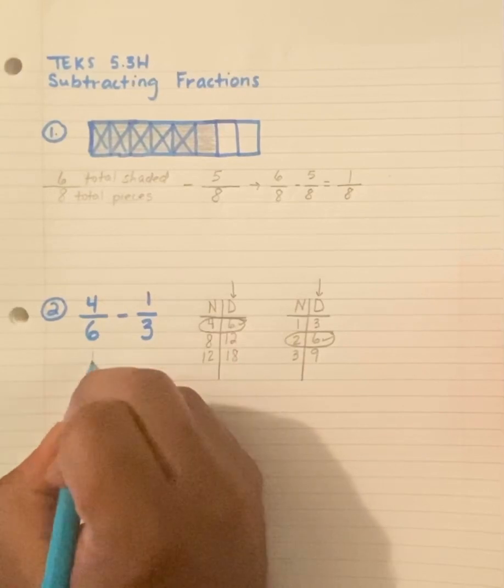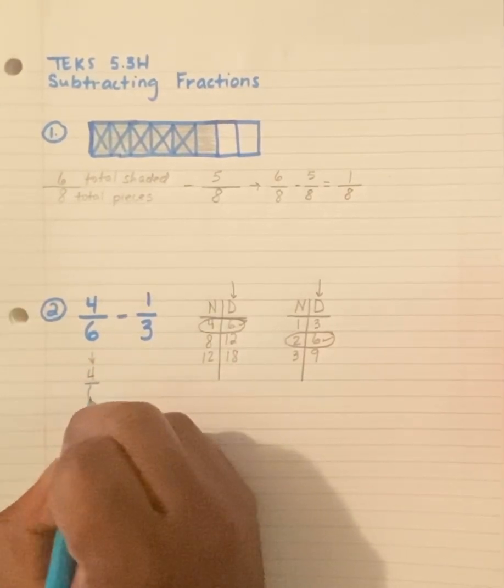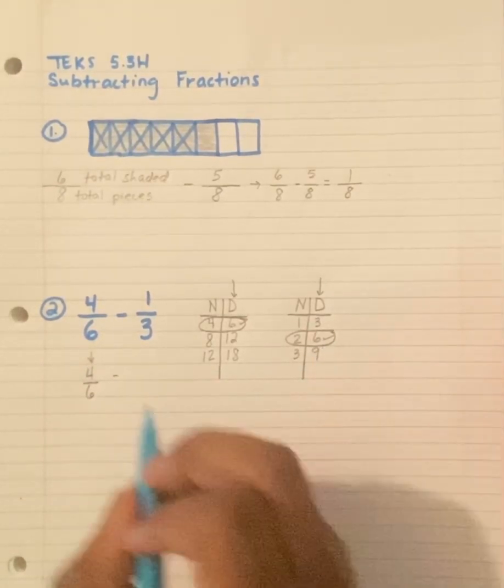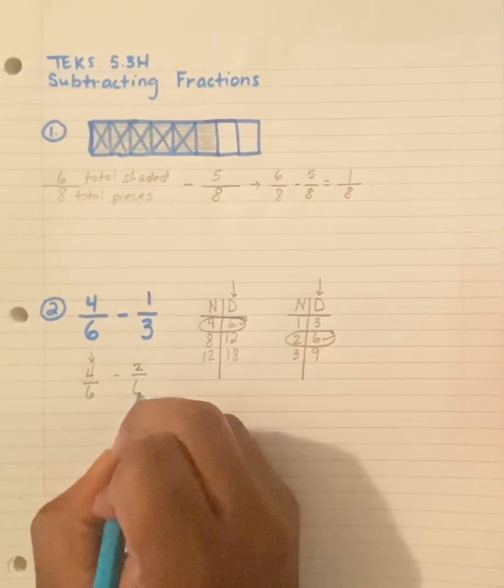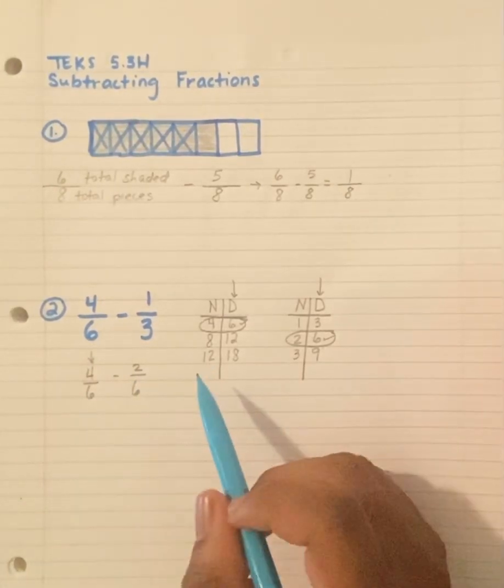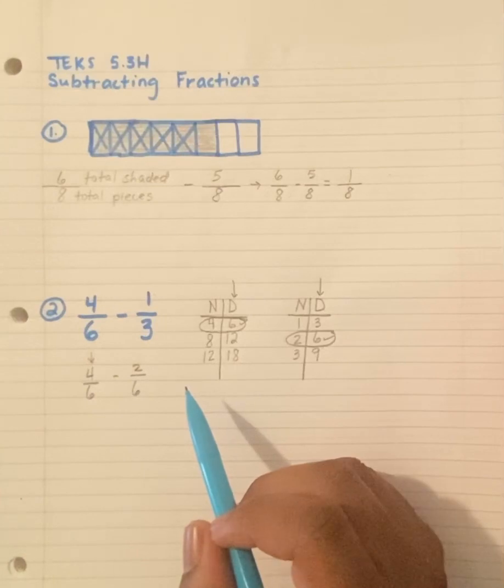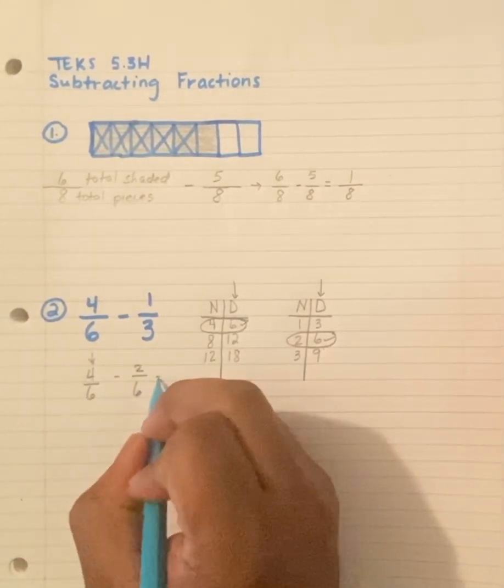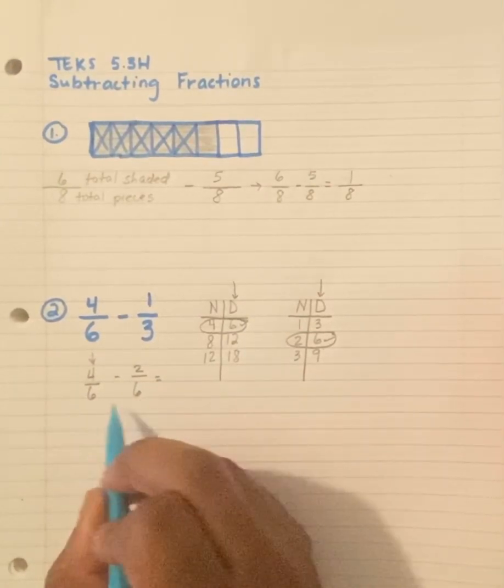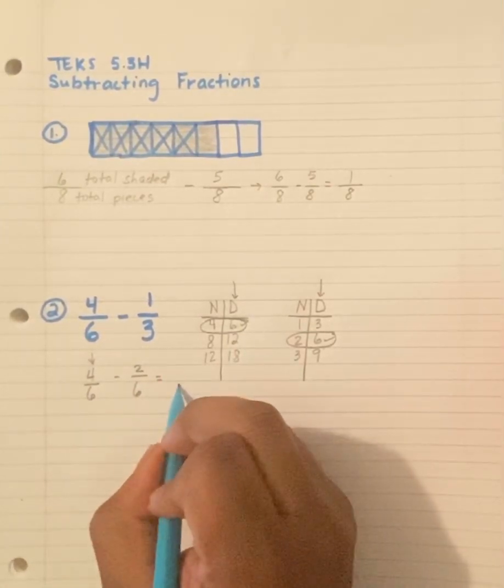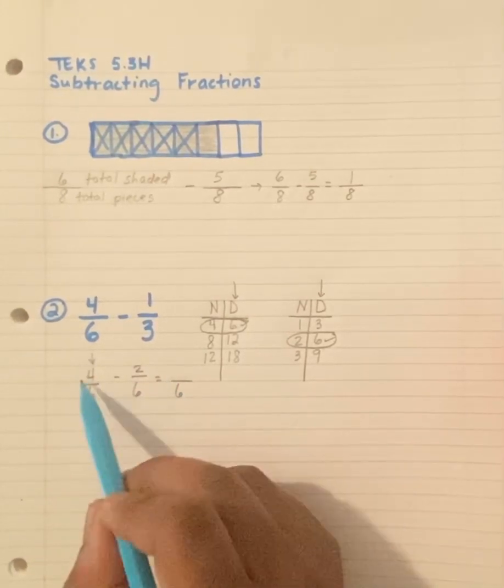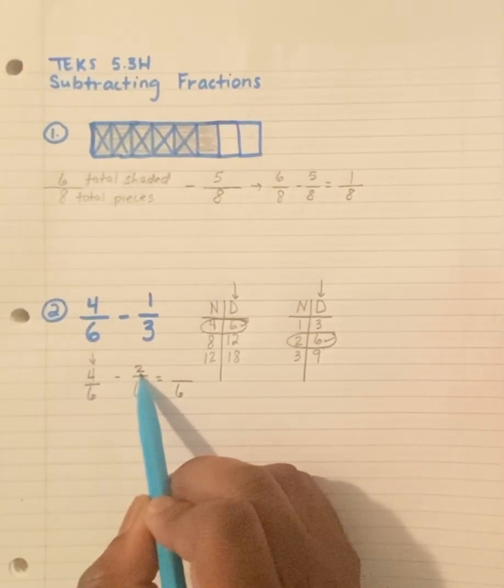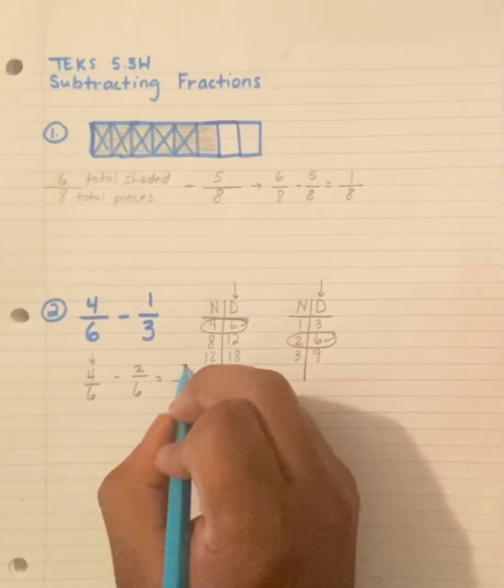This now is 4 over 6 minus 2 over 6. Remember, you cannot subtract or add fractions unless they have the same denominator. Now we're going to subtract. Remember, we can't subtract the denominators. They must stay the same. It's 6. But we can subtract 4 minus 2, the numerators. 4 minus 2 is 2.